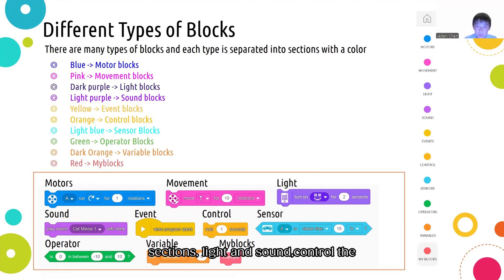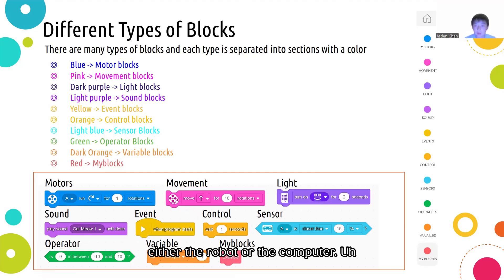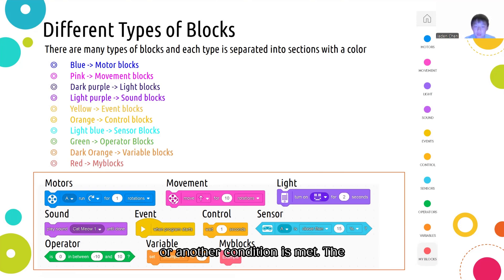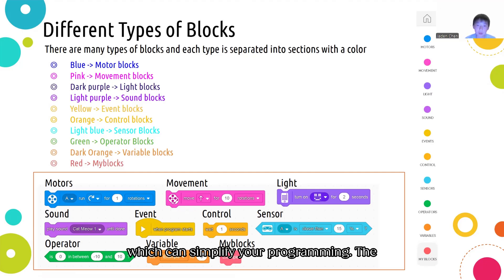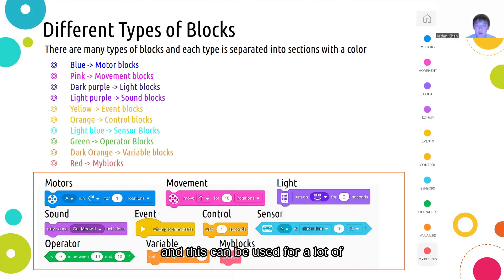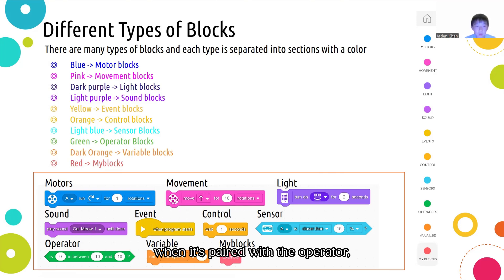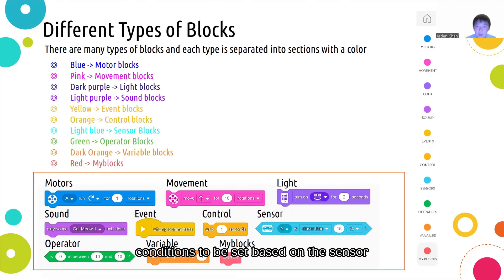Next, the dark purple and light purple sections, light and sound, control the light matrix located on the Spike Prime hub, and can play sounds on either the robot or the computer. Event blocks, which are in the yellow section, trigger the blocks attached below when the program starts or another condition is met. The orange control blocks can pause the program with wait blocks or loop the blocks inside a loop command, which can simplify your programming. The light blue blocks hold sensor values like the gyro angle or the color sensor, and can be used for conditions and interacting with the environment. When paired with the operator section, which is green, it can create conditions based on the sensor values.